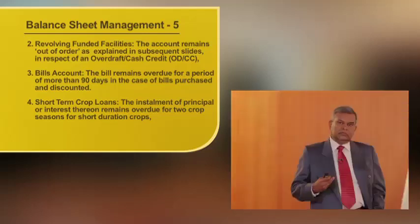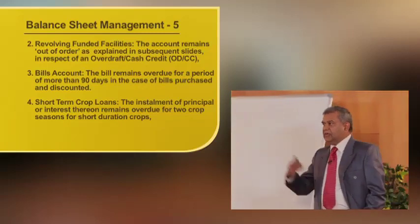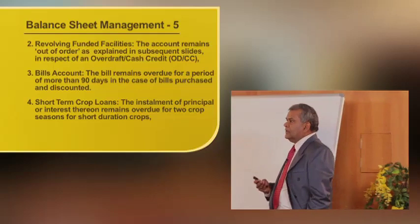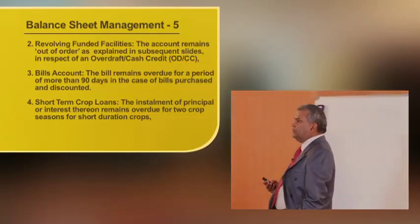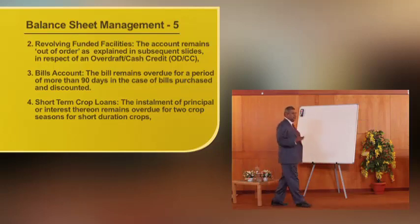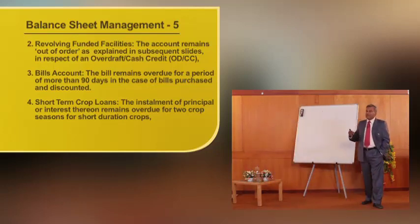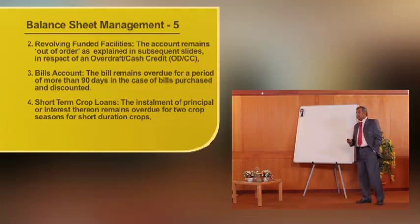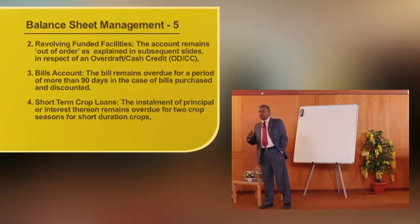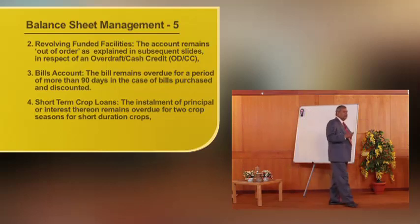Having seen term loans and cash credit, let us move to the next credit facility type — bills. Bills are self-liquidating assets. A bill remains overdue for more than 90 days in the case of bills purchased and discounted. The difference is that a purchased bill is an on-demand bill, whereas a discounted bill falls due 90 days after sight.